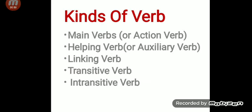Now, kinds of verb. There are basically five kinds of verb: main verb or action verb, helping verb or auxiliary verb, linking verb, transitive verb, and intransitive verb.